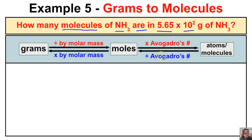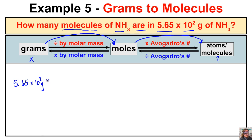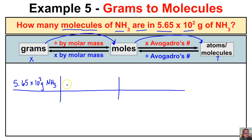In this example: how many molecules of NH₃ are in 5.65 × 10² grams of NH₃? We know the number of grams and want to find the number of molecules. This is a two-step problem — we first convert grams to moles, then moles to molecules. We start with 5.65 × 10² grams of NH₃. To go from grams to moles we divide by the molar mass, so we need the molar mass of NH₃.